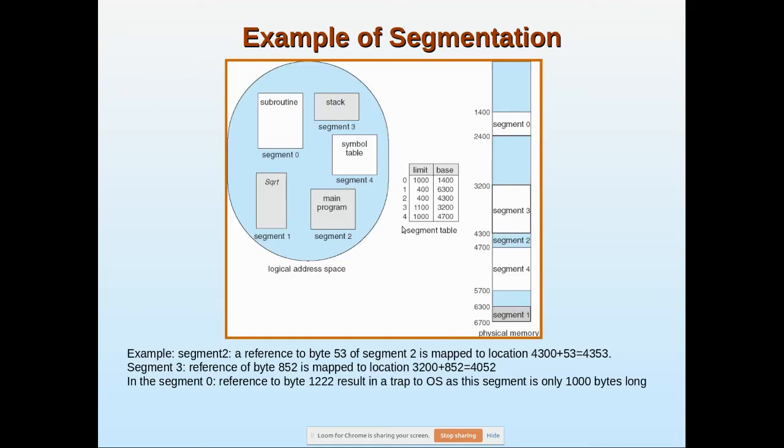Let's consider this view: subroutine, stack—this is one process. These segments reside in main memory. This is the user's point of view, how we see it in C++ or any compiler. The OS assigns names to segments: 0, 1, 2, 3, and 4.